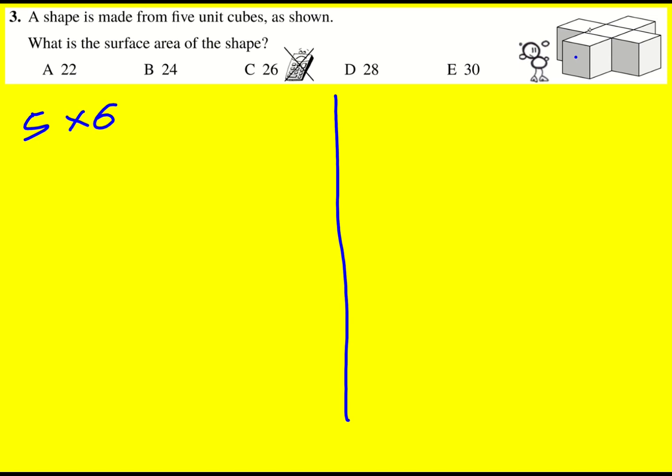Then we can just think about what happens when we start connecting them. So this connection here, I'm going to lose a face for this cube. I'm also going to lose a face from the middle cube. So I'm going to have to minus two. And if I do that for all of the connections, like I can see there's actually four of them, I'm going to minus eight. So it's going to be 30 minus eight which gives 22.